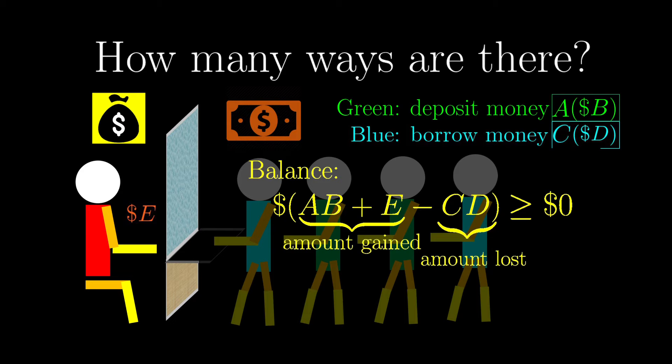As far as I know, the problem of how many ways there are to queue up the customers with so many variables is still unsolved. This shows how counting systematically can be difficult, and in this case, extremely difficult.